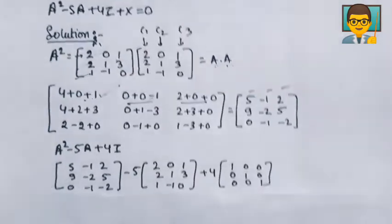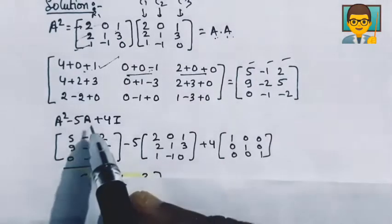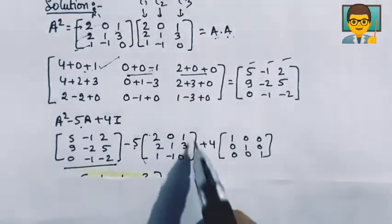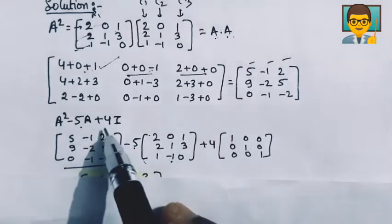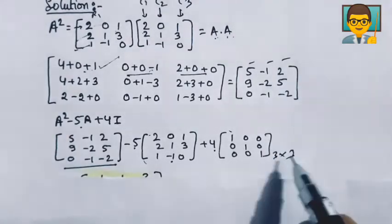So the value of A², minus 5A (minus 5 times the matrix A written here as it is), plus 4I. So 4 into identity matrix, this 3 by 3 matrix.